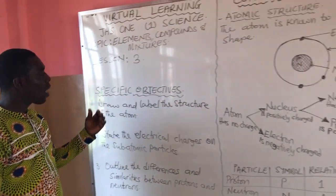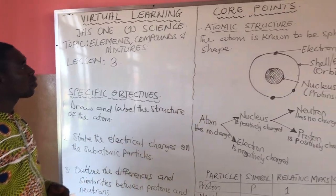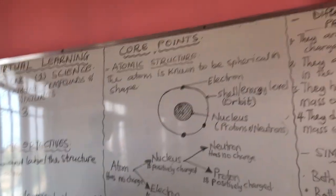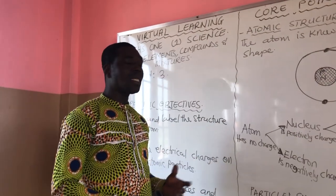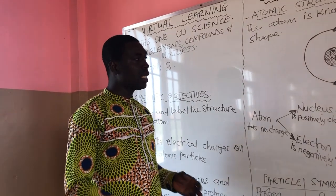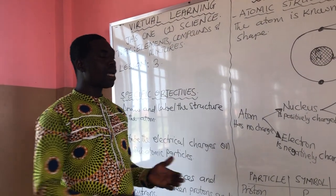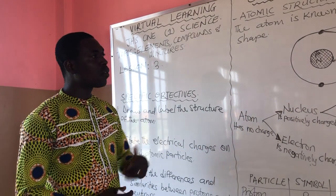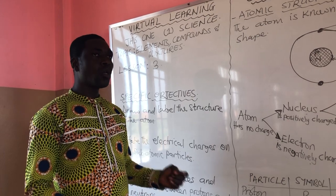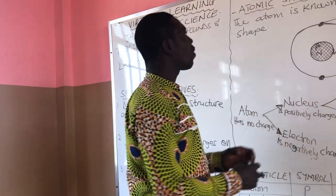These are our objectives for today's lesson. Atoms are the smallest particles of an element that can take part in a chemical reaction. It means that substances or elements are made up of atoms. Some of these elements include hydrogen, lithium, sodium, calcium and others. All these elements contain atoms.